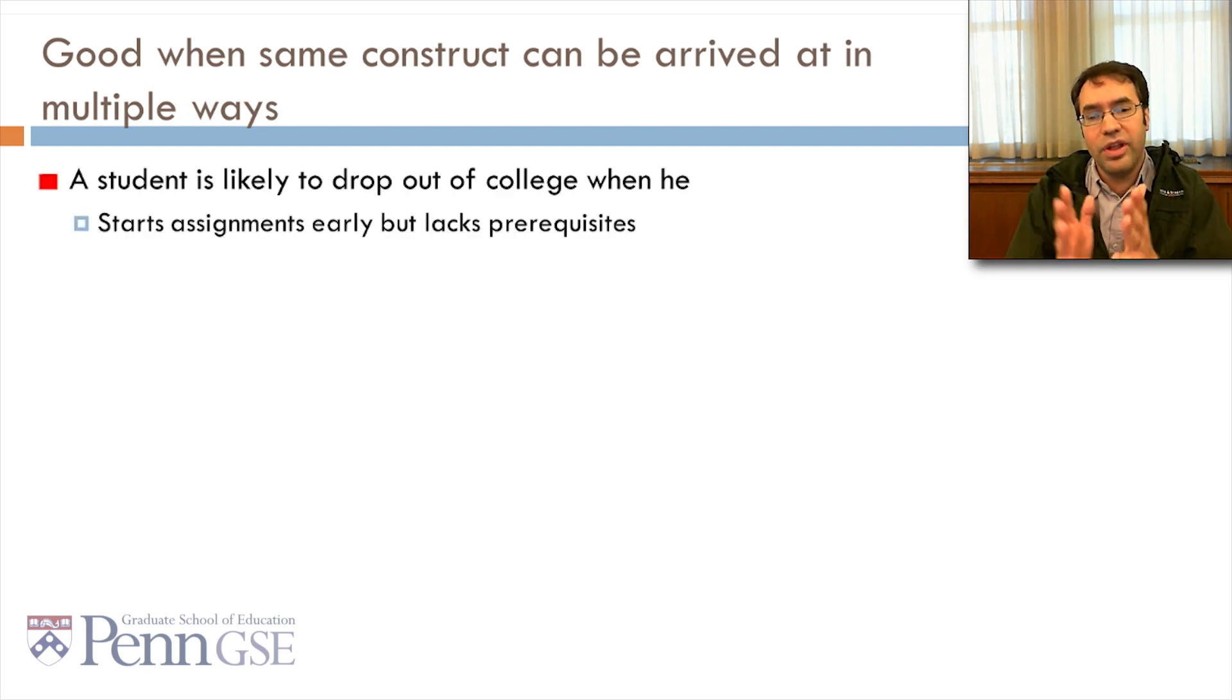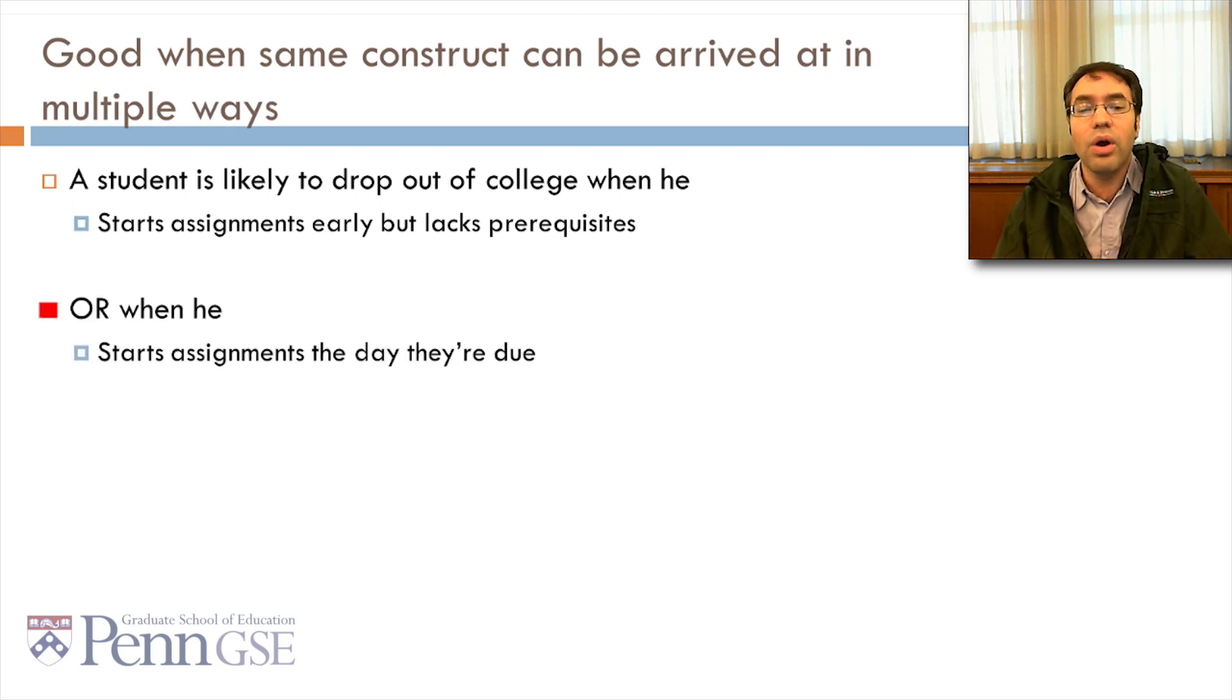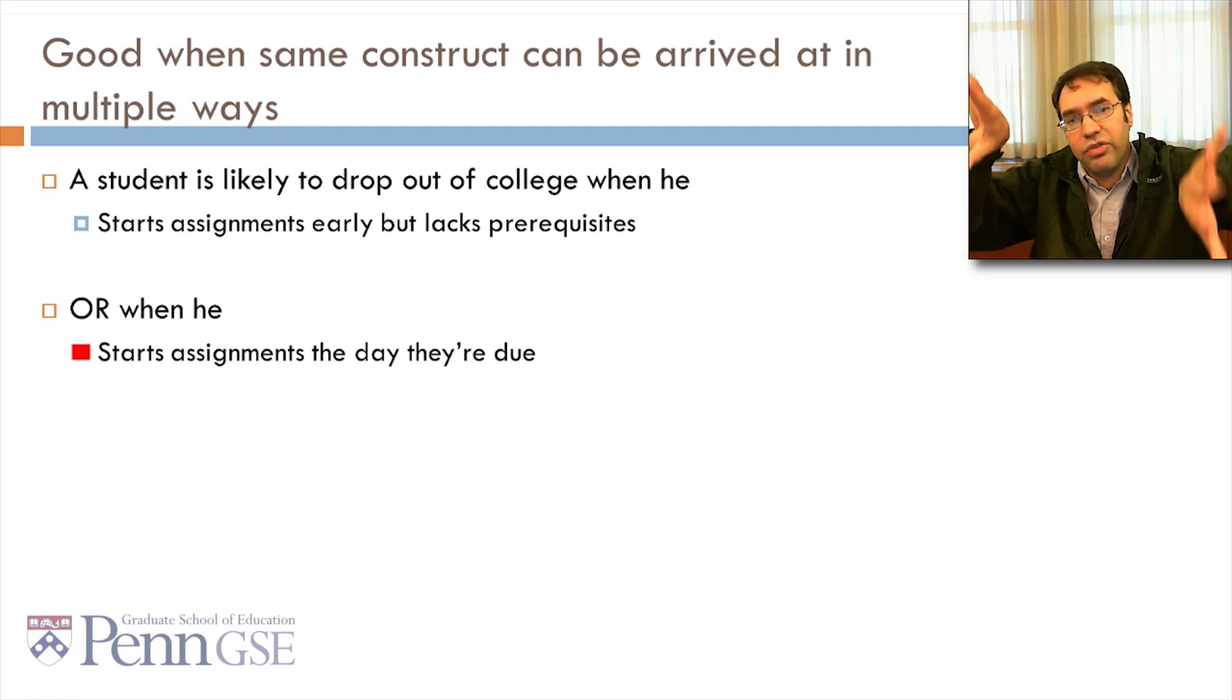And it's good when the same construct can be arrived at in multiple ways. For example, let's say that a student is likely to drop out of college either when he starts assignments early, it's a hard-working student, but he lacks the prerequisites to success, or when he starts assignments the day they're due. You can imagine two very different students that both drop out of college but show these patterns.